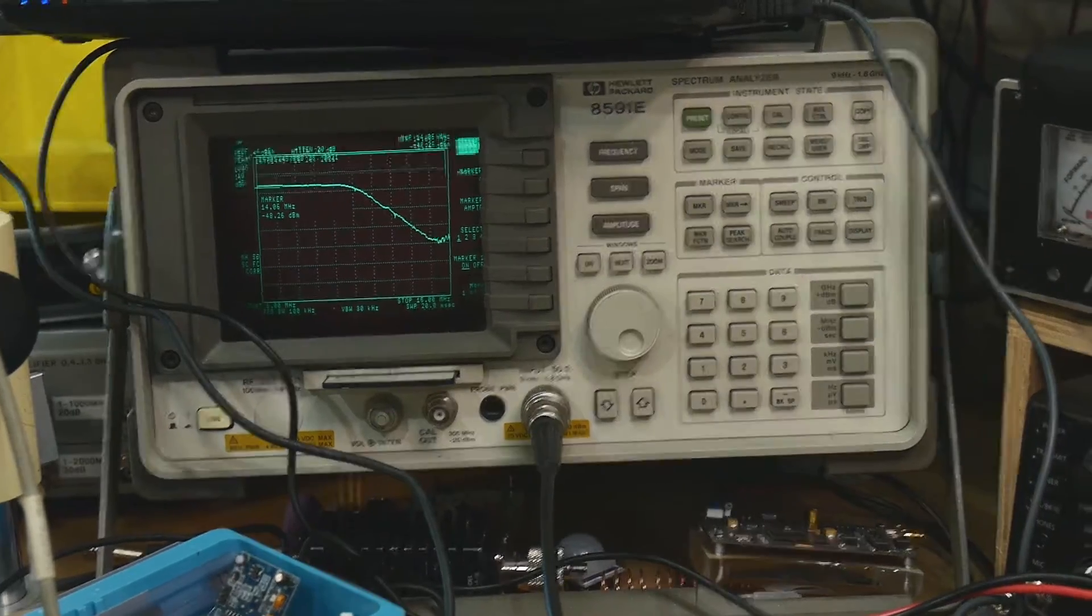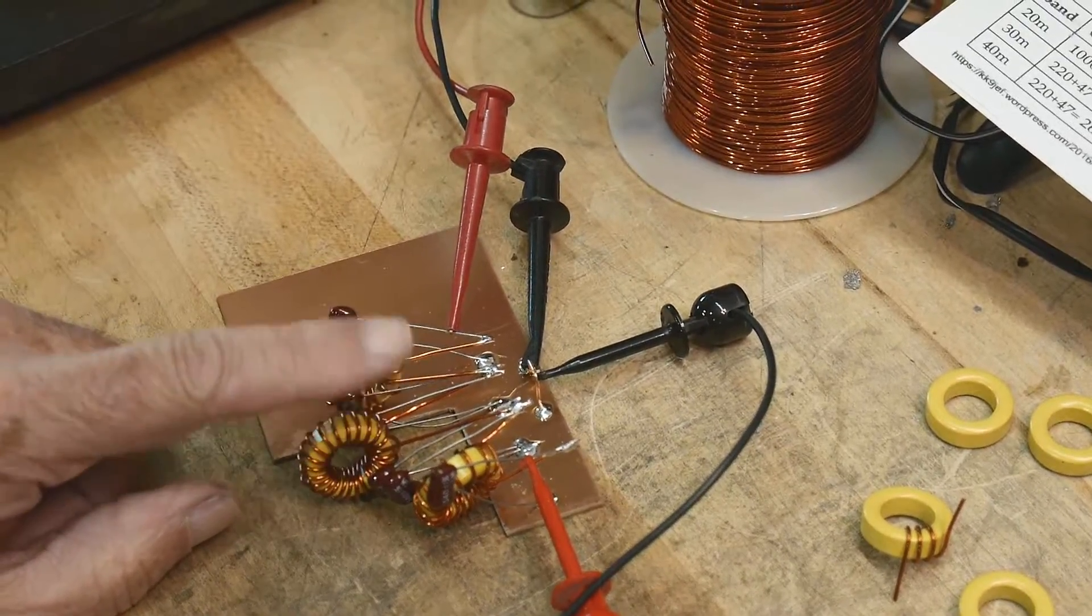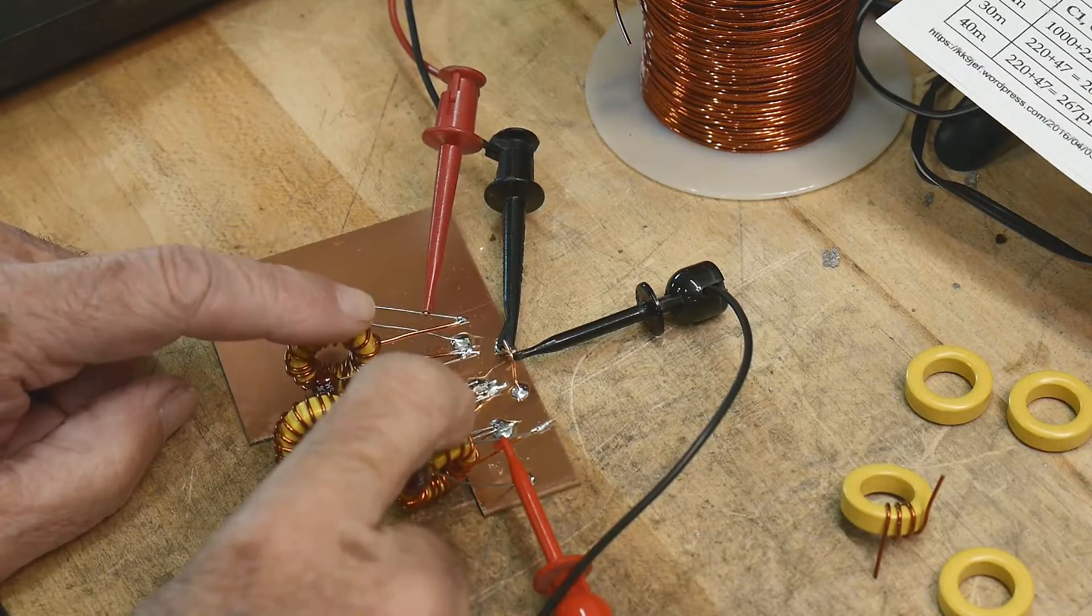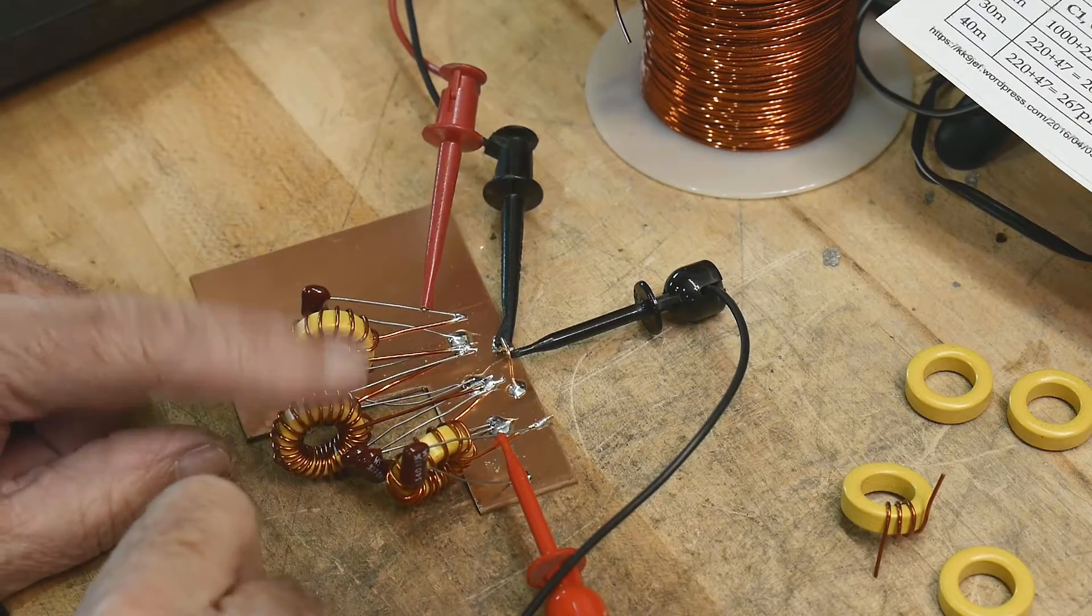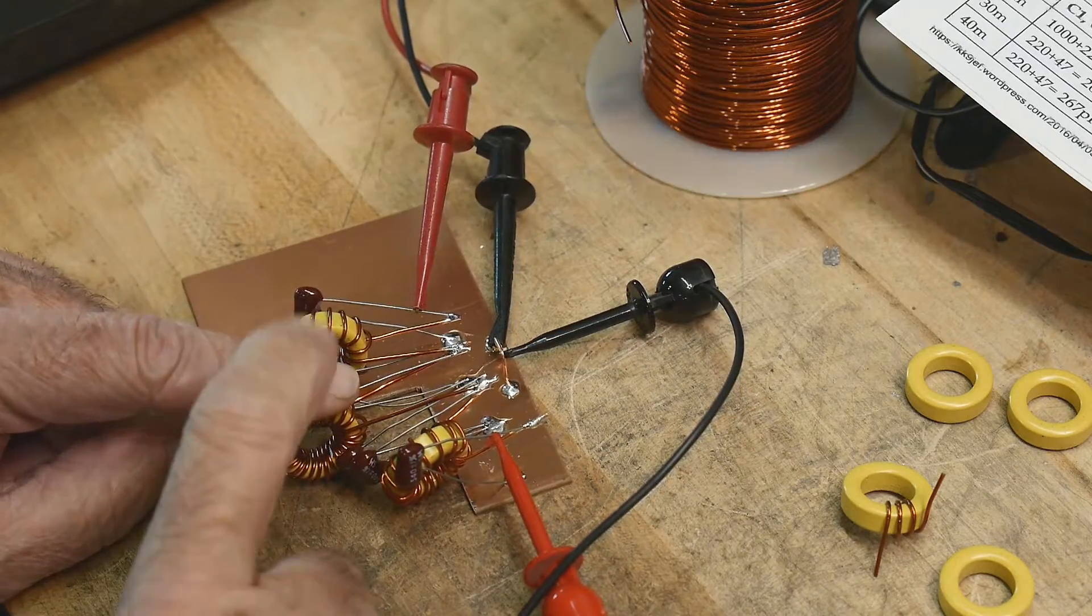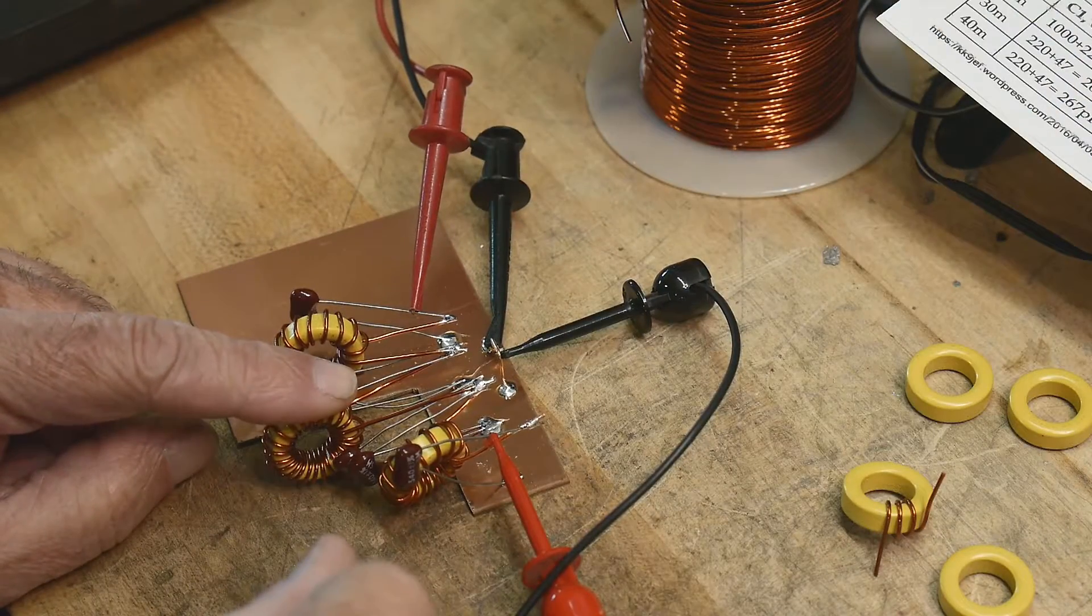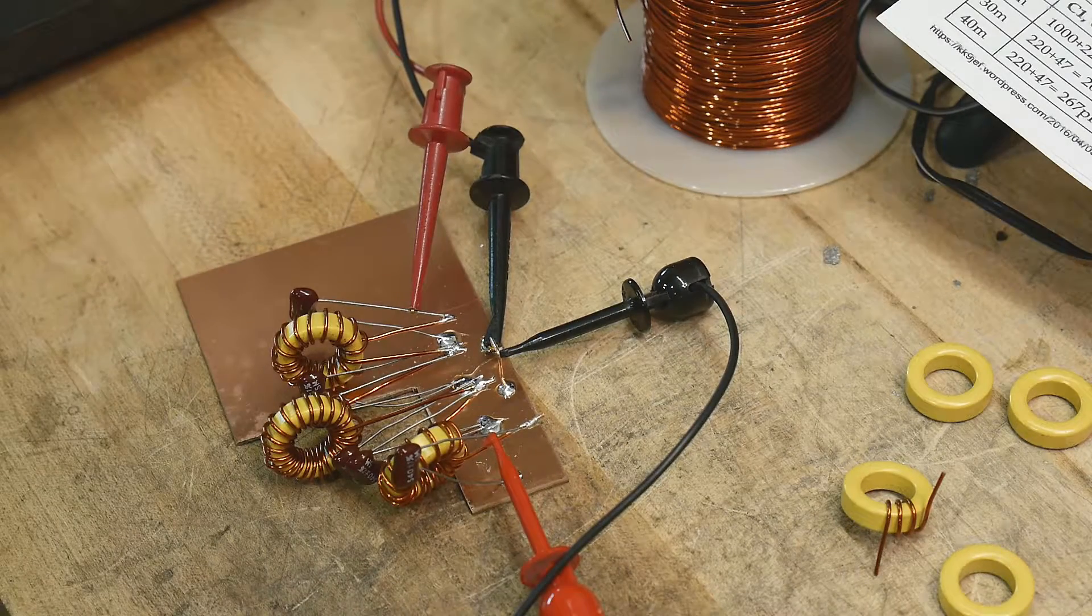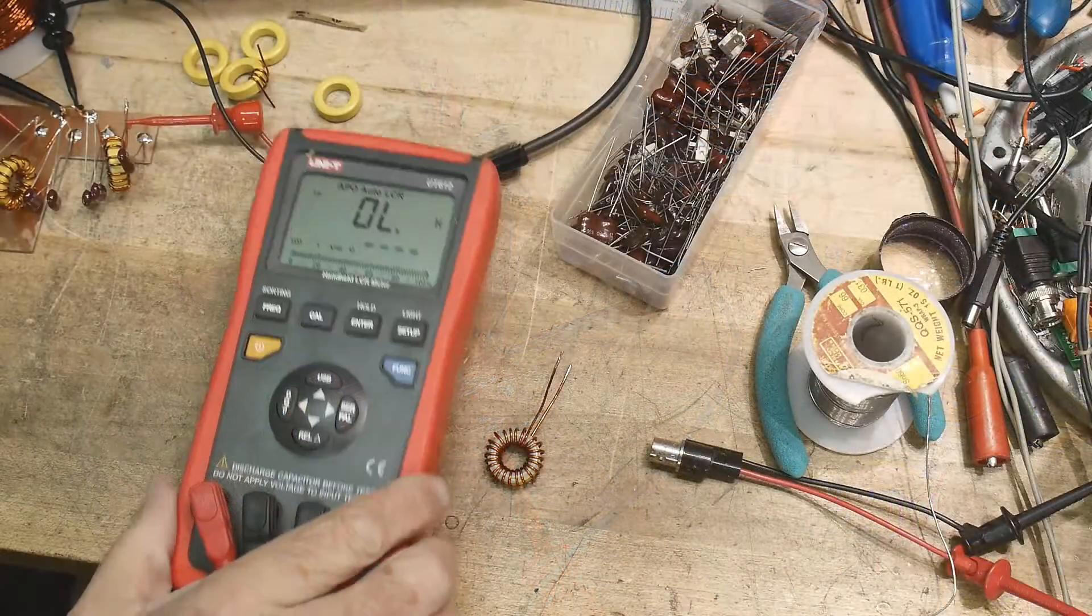But I think the thing to do is let's go ahead and remove the center inductor. These inductors I think are pretty spot on in value. And we'll take this inductor out and we'll remove a couple turns until we get the 1.7 microhenries and see if everything improves.